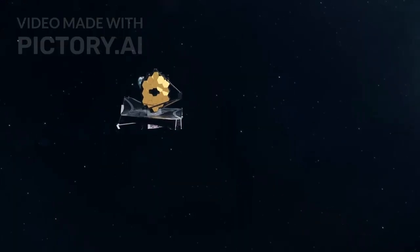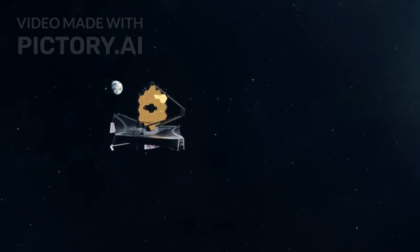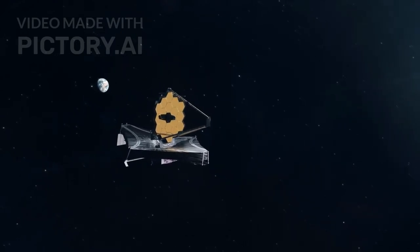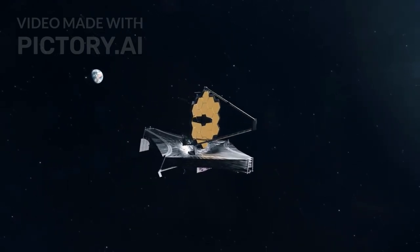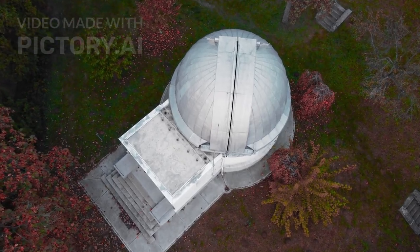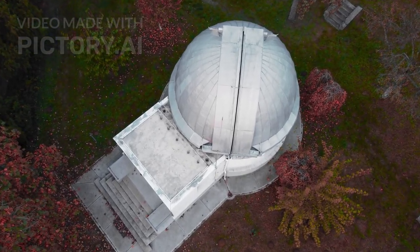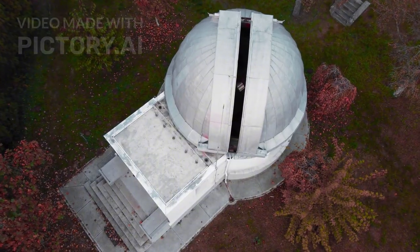The James Webb Space Telescope, correctly called JWST, was designed for this purpose. It was built to see farther, sharper, and deeper than any telescope before it. Some scientists jokingly called it a time machine pointed at the sky.